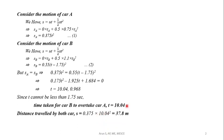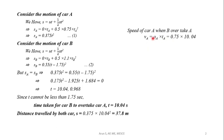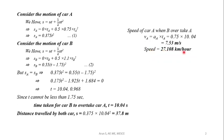Now we find the speed of car A when B overtakes A. Using V = a × t: V_A = A_A × T = 0.75 × 10.04 = 7.53 metres per second. Converting to kilometres per hour, the speed of car A is 27.108 km/h.